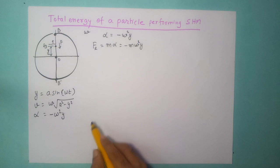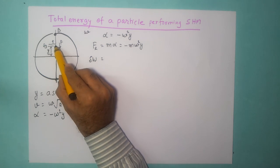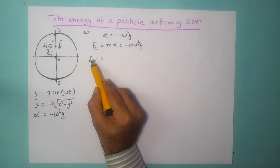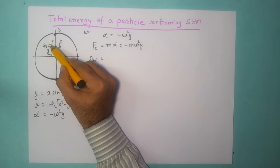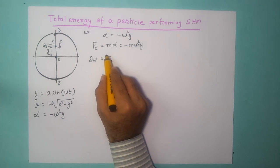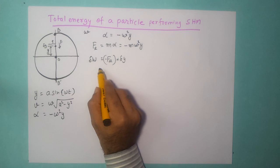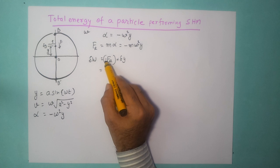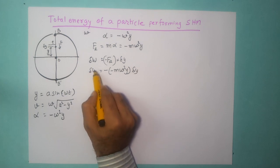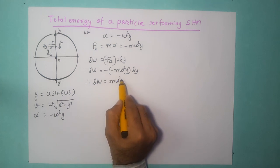The work done against this restoring force — small work done delta w — against the restoring force: the particle is moving a small distance in this direction while the restoring force acts opposite to it. So delta w equals minus Fr into delta y. Now Fr is minus m omega squared y, so this gives minus of minus m omega squared y into delta y, and therefore delta w equals m omega squared y delta y.